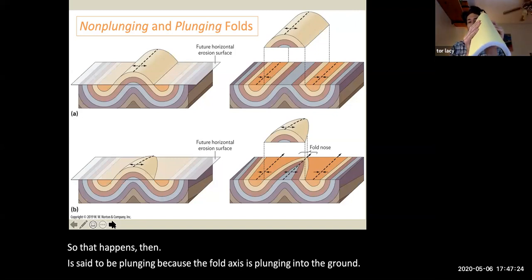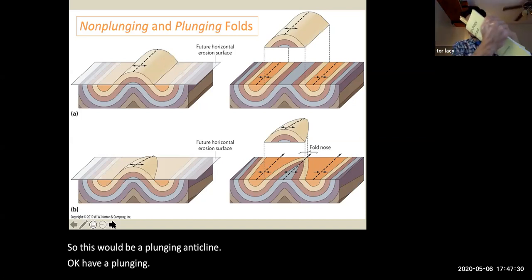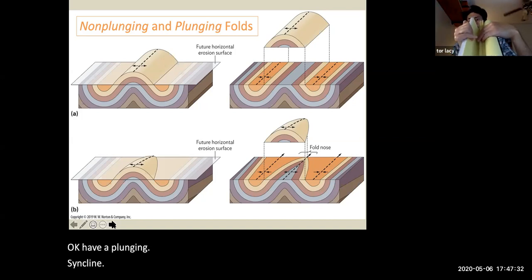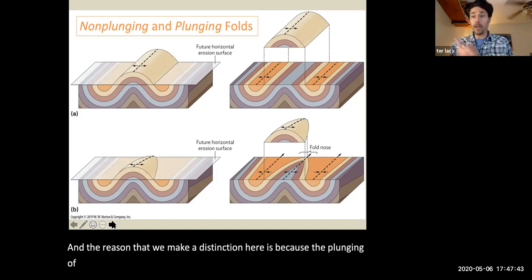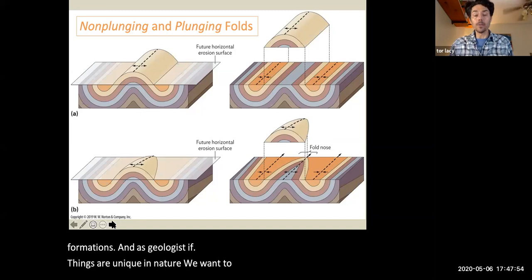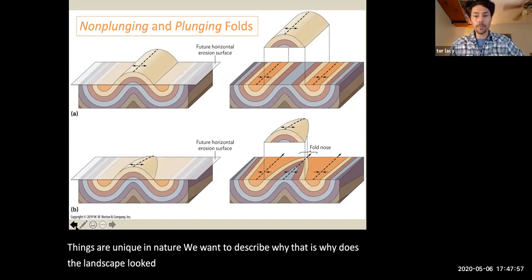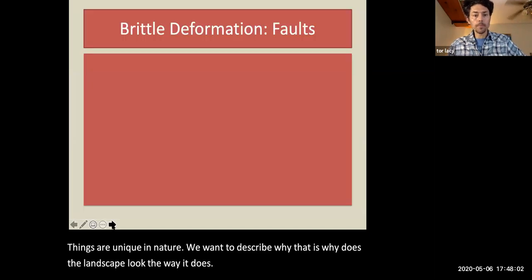This would be a plunging anticline. We could have a plunging syncline. And the reason that we make a distinction here is because the plunging of anticlines or synclines, once they are eroded, can make unique rock formations. And as geologists, if things are unique in nature, we want to describe why that is. Why does the landscape look the way it does?